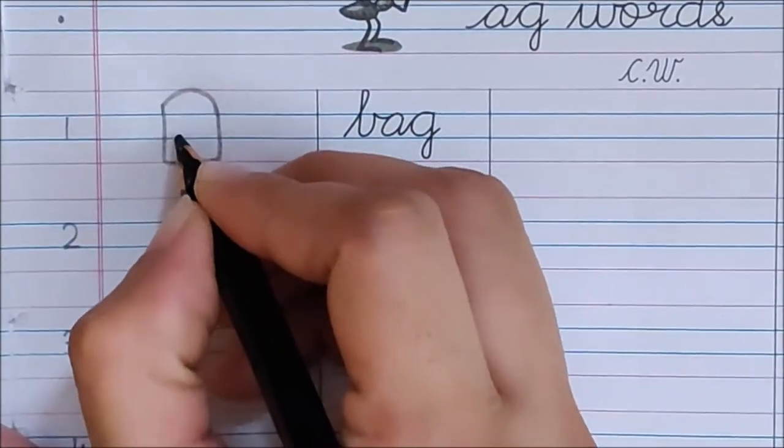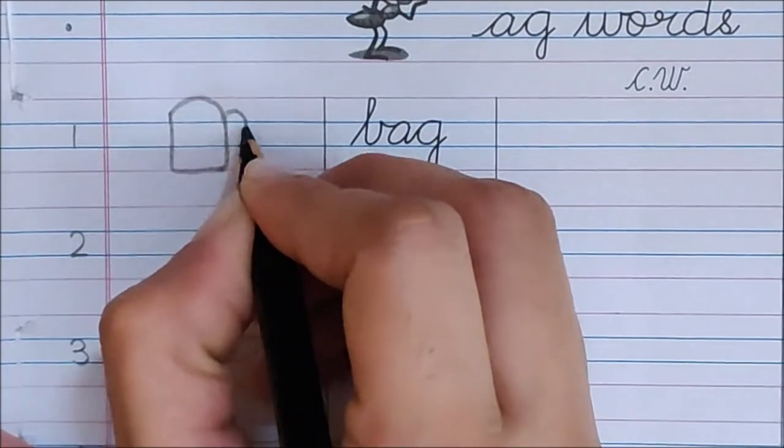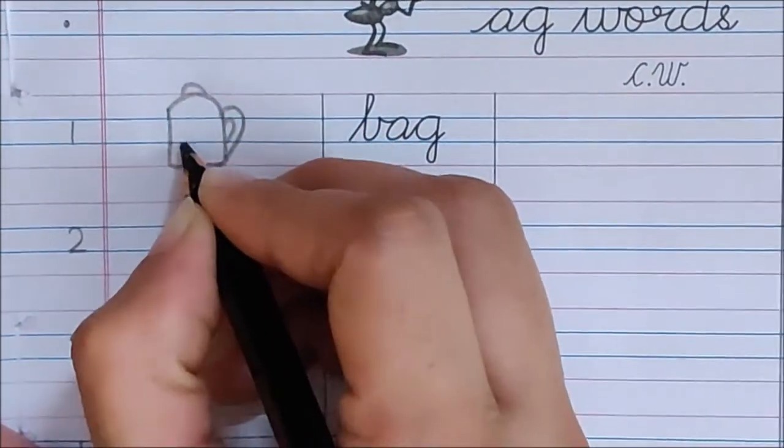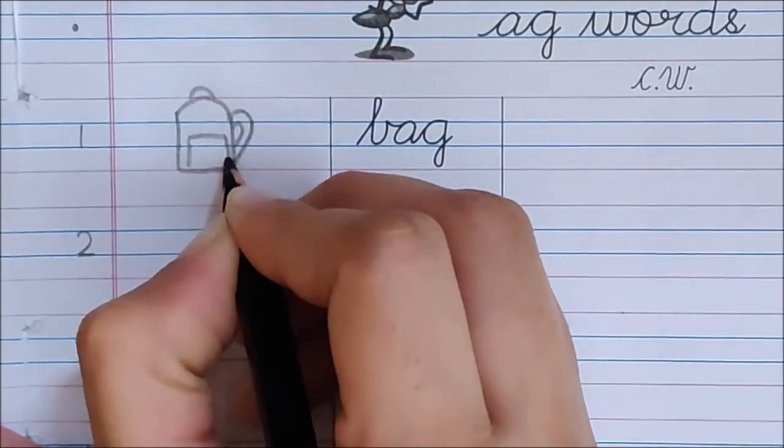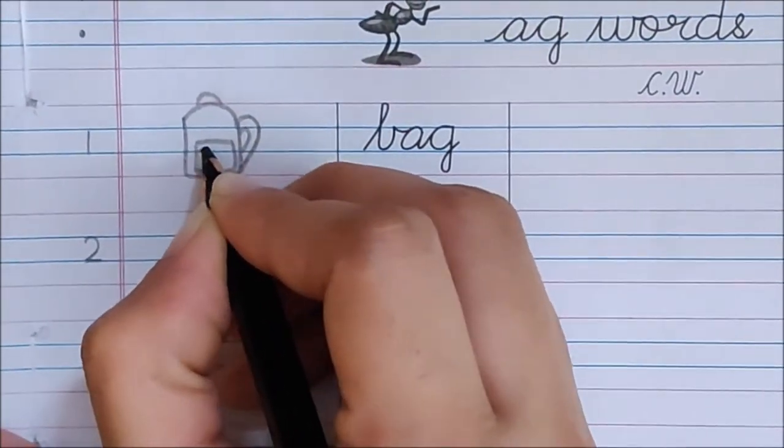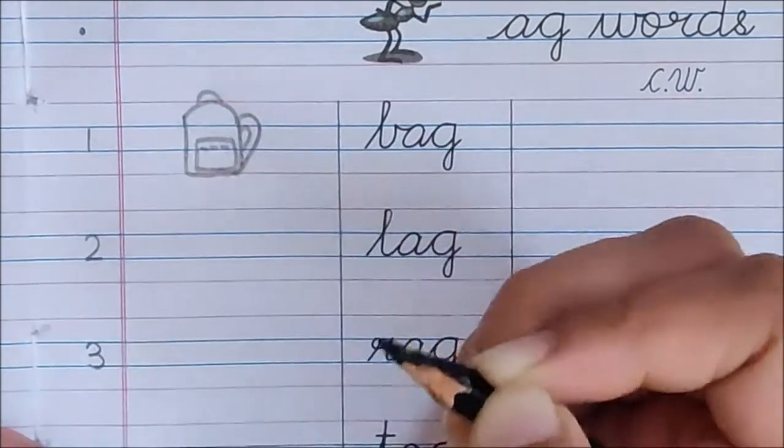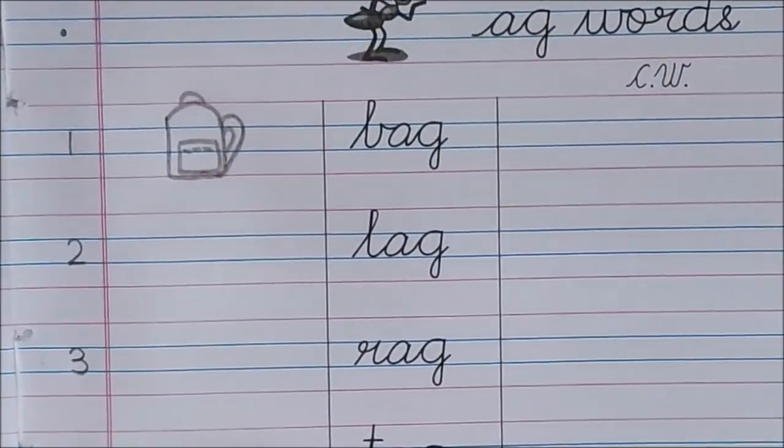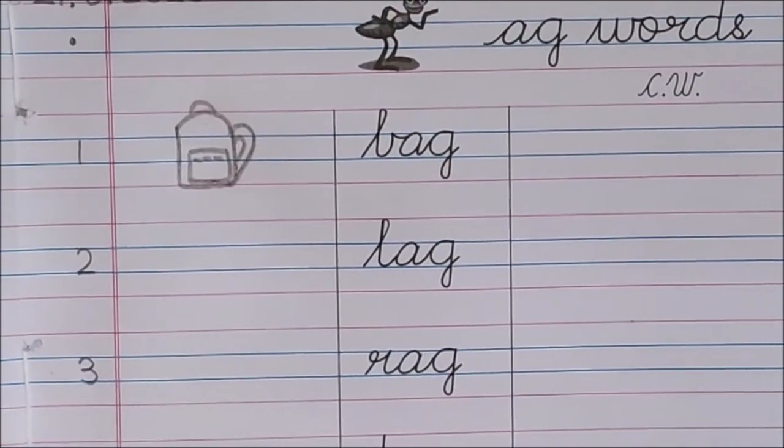This is a bag. These are the straps of the bag, and this is a pocket. This is a bag. Now children, let us read the next word.